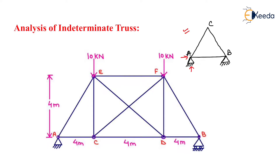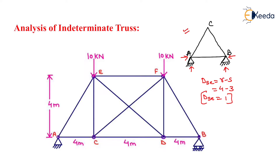At support A there will be 2 reactions acting, and at support B there will be 2 reactions acting. Now if we find the degree of external static indeterminacy C, its formula is R minus S. We have 4 external reactions, so R equals 4, and the equilibrium conditions for trusses equals 3. So the total external static indeterminacy equals 1, meaning we are not able to find all 4 reactions by equilibrium conditions alone, making this an indeterminate truss.